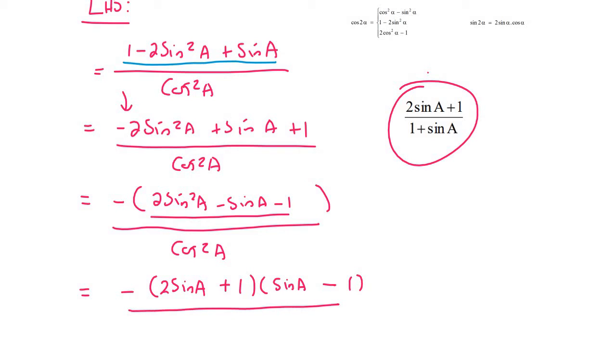And then at the bottom, we've just got cos squared a. So things are looking pretty good at the top because we've got this two sin a plus one, and we have that at the top as well. At the bottom here, we only have sin, but here we have cos.